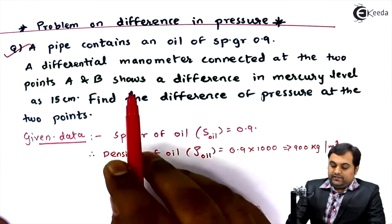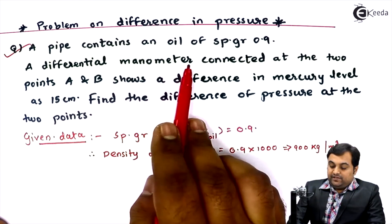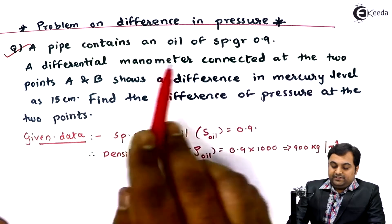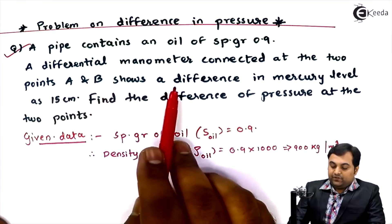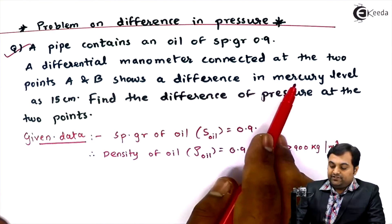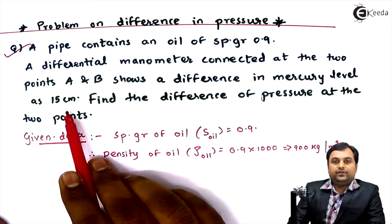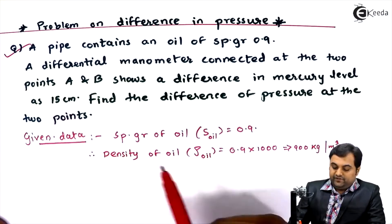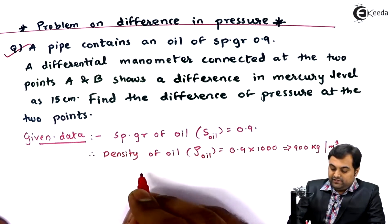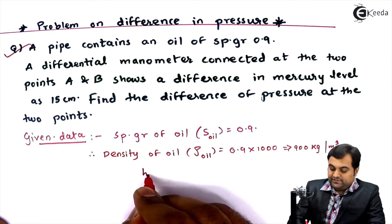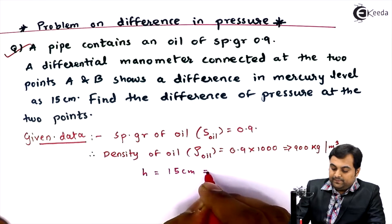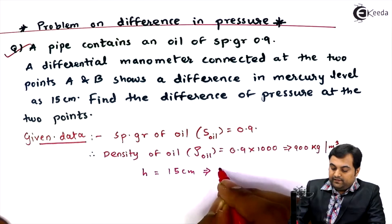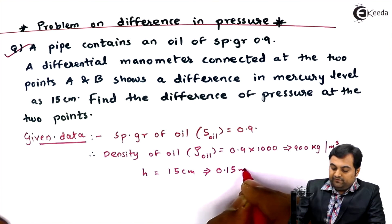Next, a differential manometer is connected at the two points A and B and shows a difference in mercury level of 15 centimeters. This difference in mercury level is h, which equals 0.15 meters.